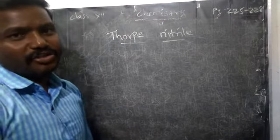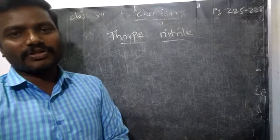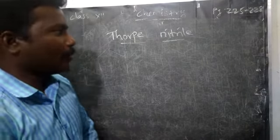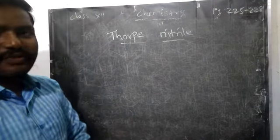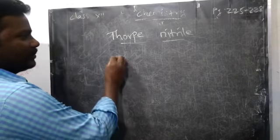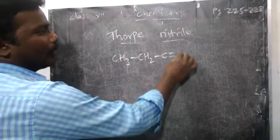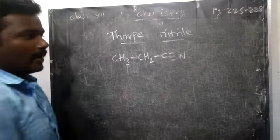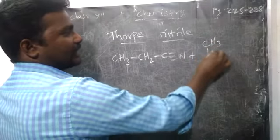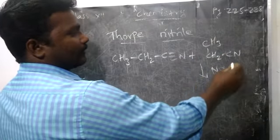Thorpe nitric condensation reaction. Condensation reaction means a reaction like addition, with or without elimination of small molecules like water or ammonia. In this condensation, we are going to take two moles of propanenitrile — CH3, CH2, C≡N — treated with another one mole of propanenitrile, CH3, CH2, CN, in the presence of sodium ethoxide.